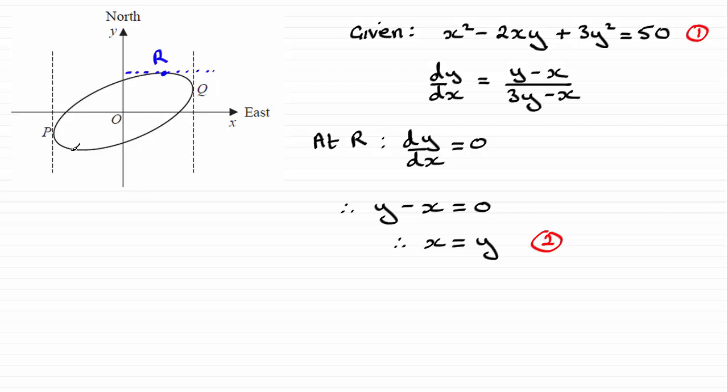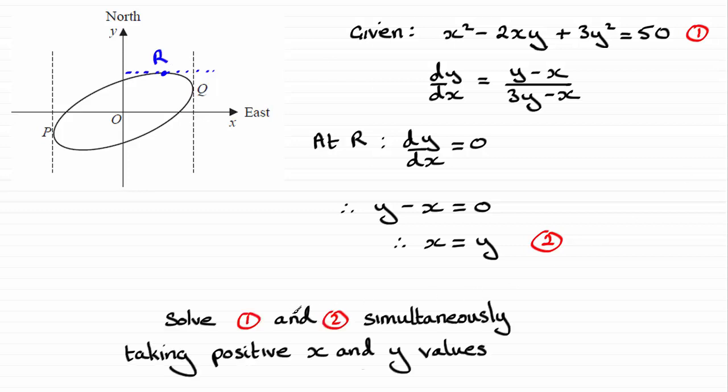So we would solve them simultaneously, take the positive y value, substitute it back into this equation and take the positive x value and that would give us the coordinates then of R. So in summary then what we'll do is solve 1 and 2 simultaneously taking the positive x and y values.